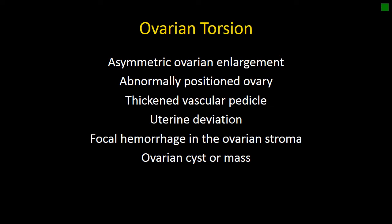The first thing you should be looking for is asymmetric ovarian enlargement. A torsed ovary becomes edematous due to ischemia and decreased venous drainage, and will enlarge relative to the other ovary.